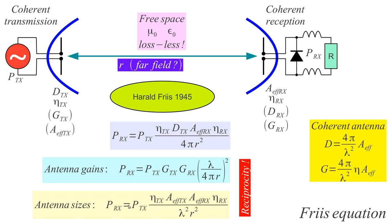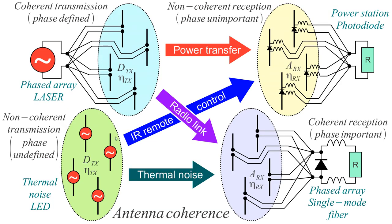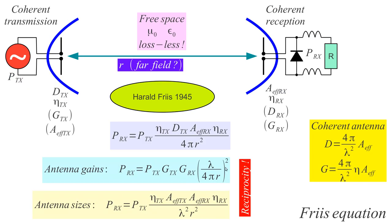These two formulas also show reciprocity — every radio link is reciprocal. Reciprocity is much easier to demonstrate with coherent antennas because with non-coherent antennas it is very difficult to define what is really happening. With coherent antennas, the transmitter quantities play exactly the same role as the receiving antenna quantities. Radio links are reciprocal, but reciprocity is easier to see with coherent transmission and coherent reception.